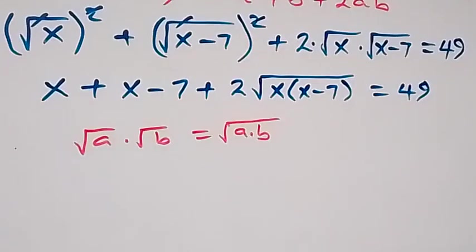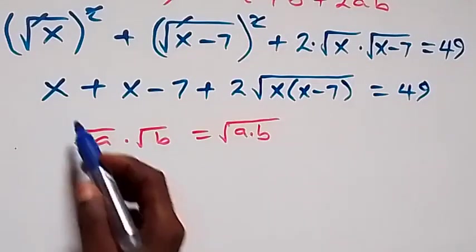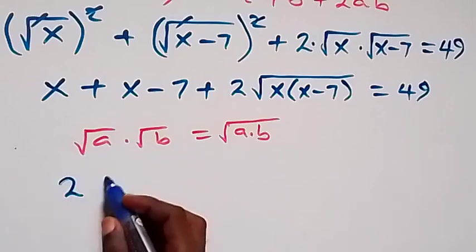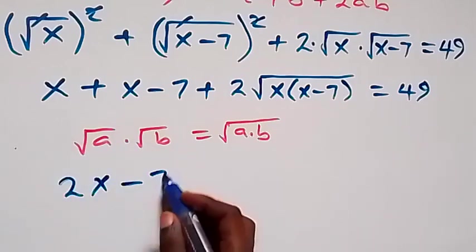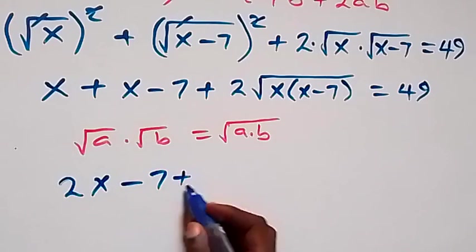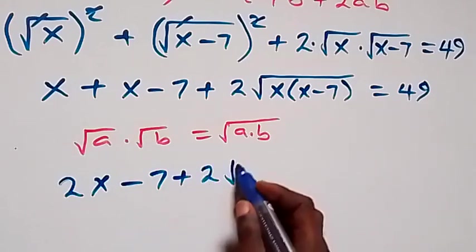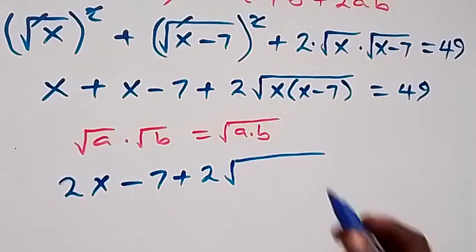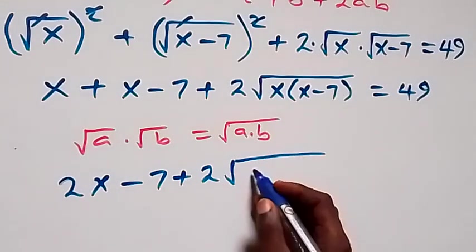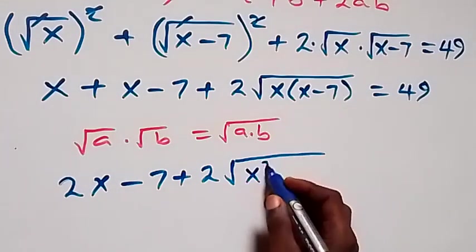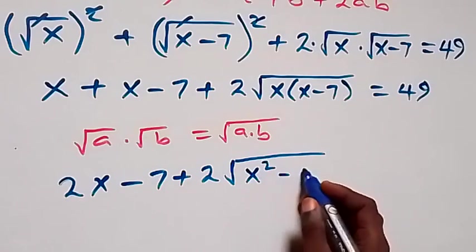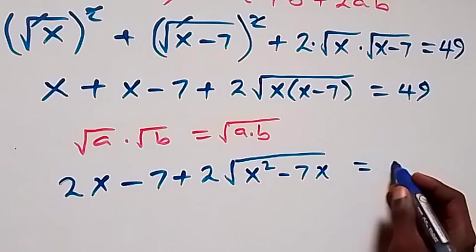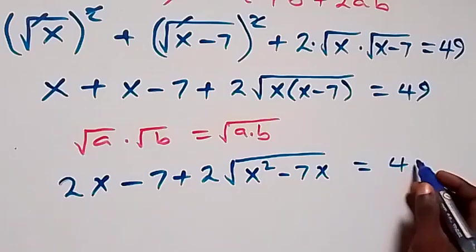So we have x plus x minus 7 plus 2 root of x times x minus 7, equals 49. Combining x plus x gives 2x, and expanding inside the bracket gives x squared minus 7x.